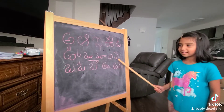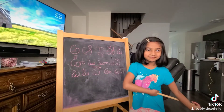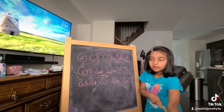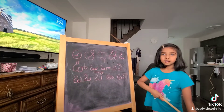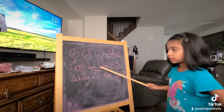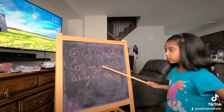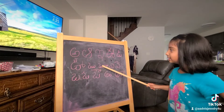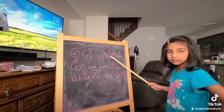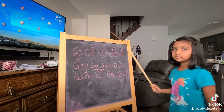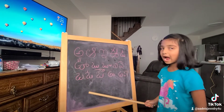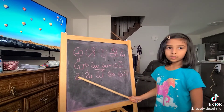Very good, good job. So now we will do the reverse exercise again. I will see what you have learned. Point where is 'ru' — very good job. Now show me where is 'e' — very good job. Now show me where is 'ow' — that is O-O.